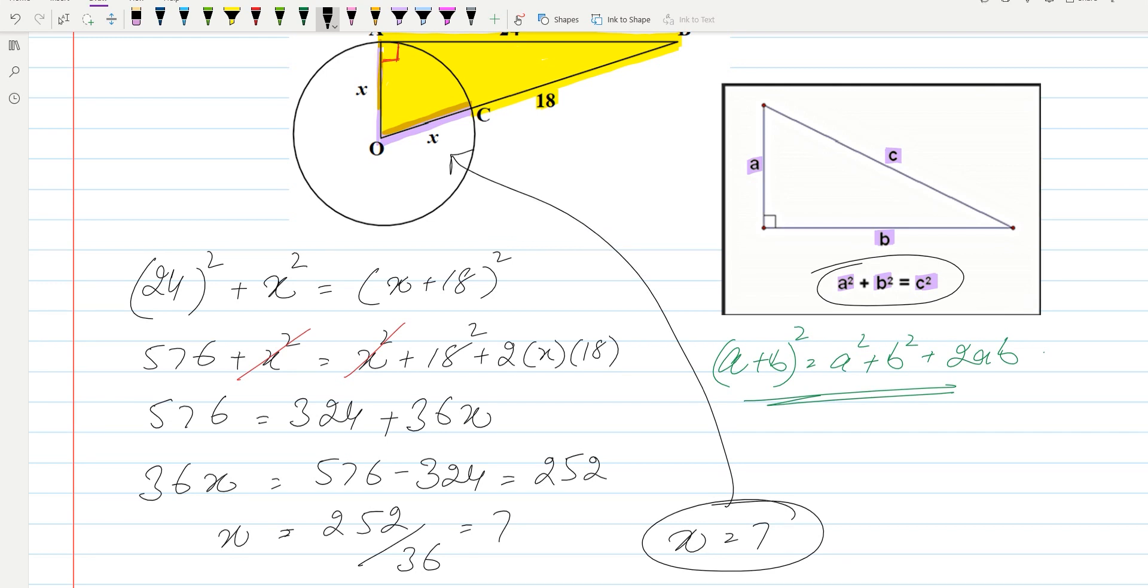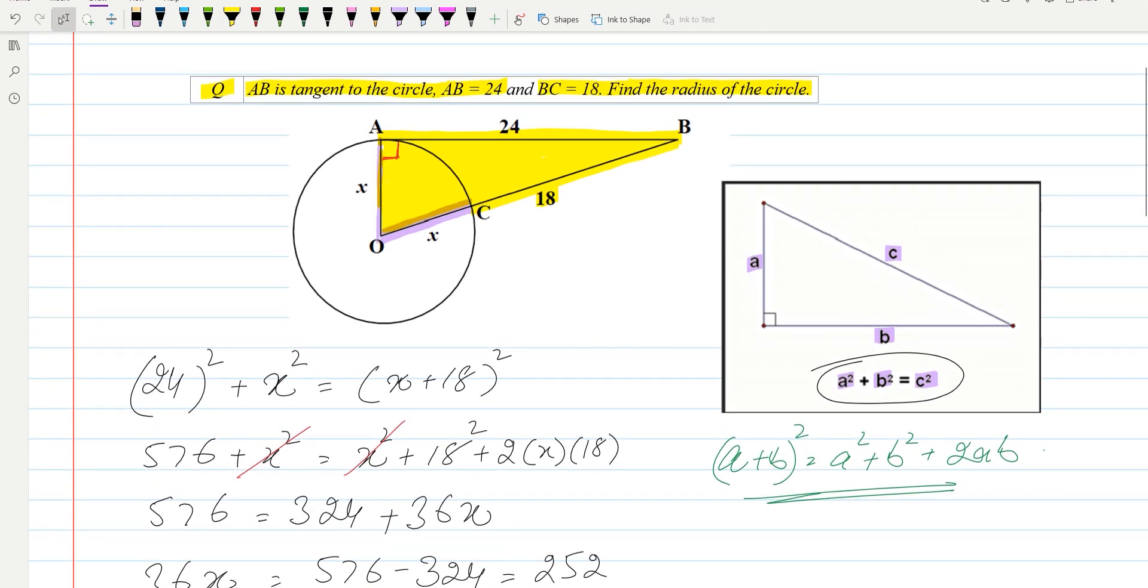This is what we were supposed to find, so the radius is equal to 7. This is what we found. This was an interesting question, easier but a little tricky. Please subscribe to the channel so you'll be getting more interesting questions. Thank you very much for watching, take care, bye.